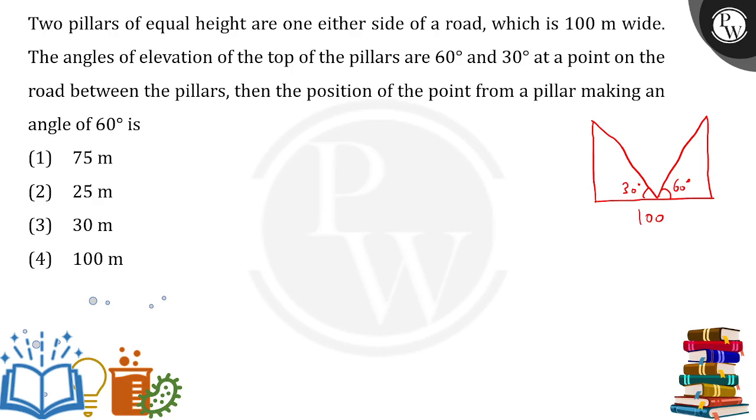Now the point is what they are asking. They are asking us this distance from 60 degrees. How much is the distance? If this is x, then this will be 100 minus x. Total distance was 100, so if this is x, this will be 100 minus x. And two pillars of equal height are there. If this is h, this will also be h. Things become easy for us.